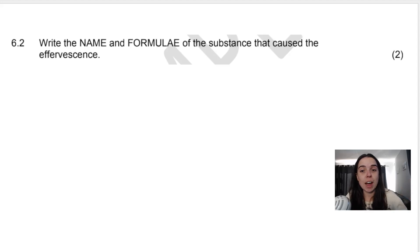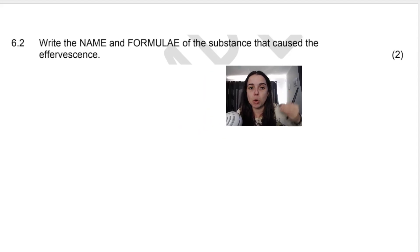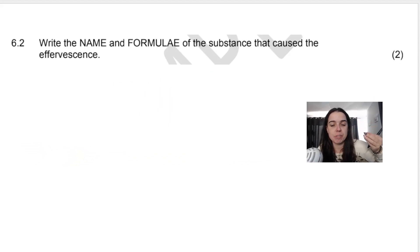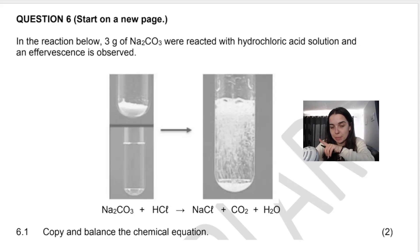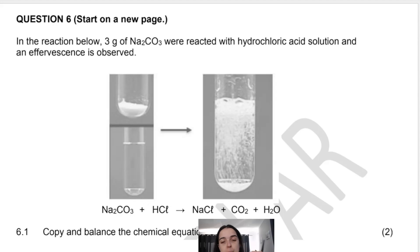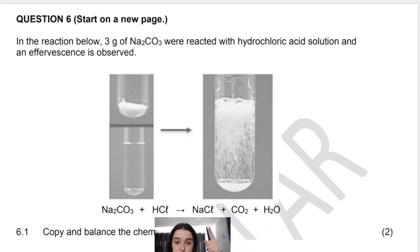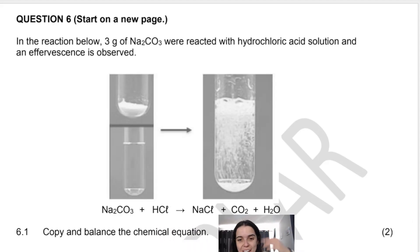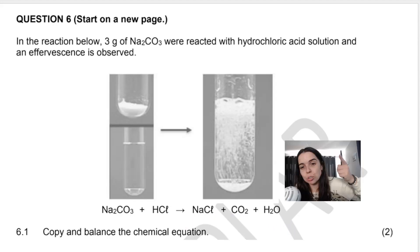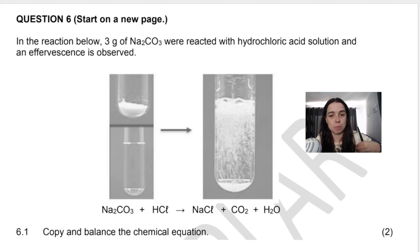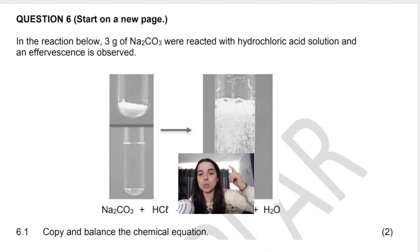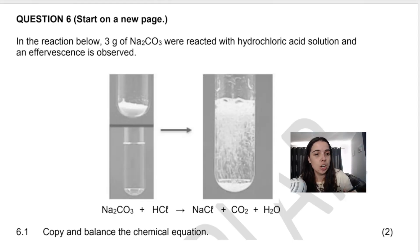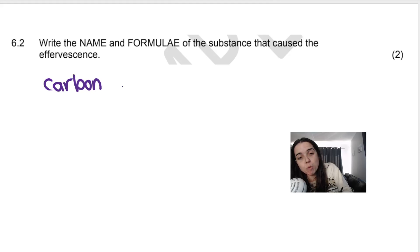The next question says: write the name and formula of the substance that caused the effervescence. Remember, effervescence is the bubbling observed in the test tube. So what caused the bubbling? Sodium chloride is like table salt, NaCl. H2O is a liquid. And CO2 — what phase is CO2 at room temperature? Gas. So CO2, carbon dioxide, is what's causing the bubbling, the effervescence.